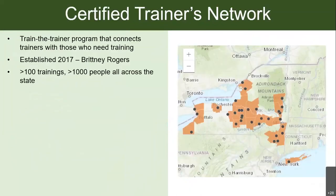With this reliance on community science, we discovered that the IMAP team in Albany cannot provide all of the trainings across New York State — there's a greater need for training than we can provide ourselves. So we've been very fortunate to develop this Certified Trainers Network. It's a train-the-trainer program that connects trainers with those who need training. It was established in 2017 by Brittany Rogers, who was a SUNY ESF student at the time but now works for the CELO PRISM. We've had over a hundred trainings and over a thousand people trained since it was started.